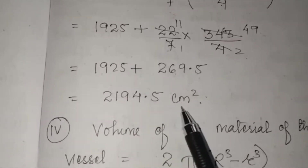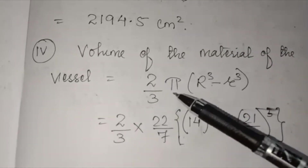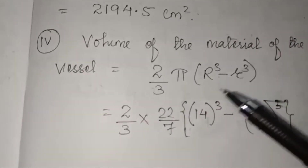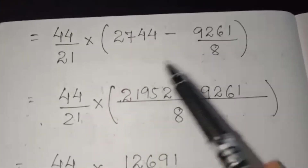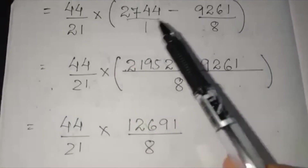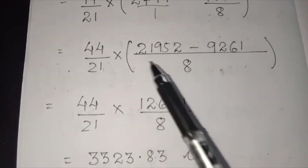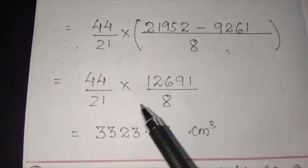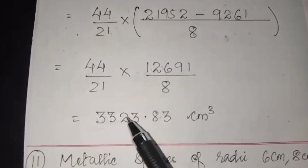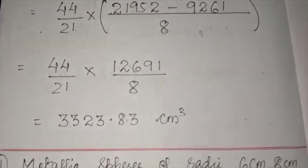Volume of the material = 2/3 π(R³ − r³). Capital R = 14, small r = 21/2. R³ = 2744, r³ = 9261/8. Taking LCM of 8: (21952 − 9261)/8 = 12691/8. Multiplying by 2/3 × 22/7 gives approximately 3300.23 cm³.